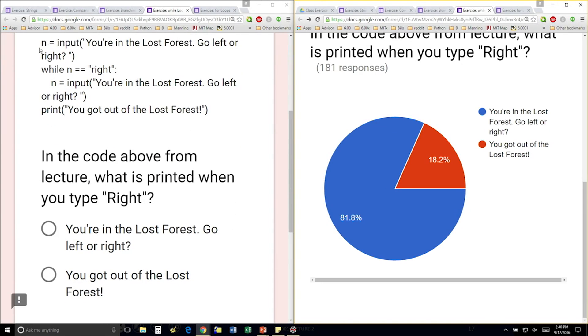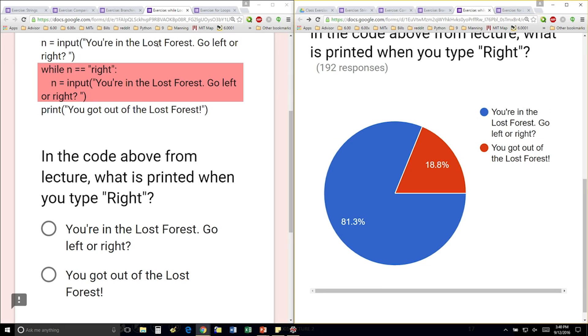So the code is: you're in the Lost Forest, go left or right. Here, the while loop is checking if the input is equal to this particular string.